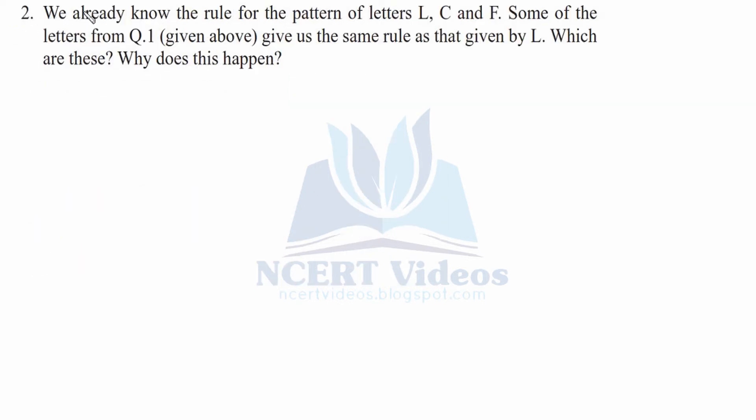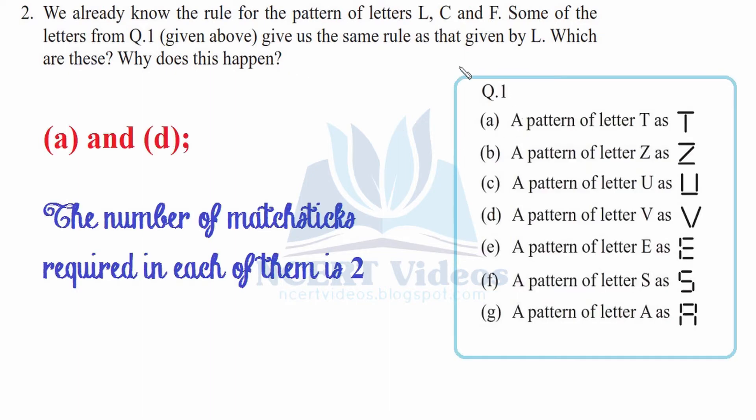Second question: we already know the rule for the pattern of letters L, C and F. Some of the letters from question 1 given above give us the same rule as that given by L. Which are these? Why does this happen? So we have to use question number 1 in order to solve this question. We are given that we have to find the rule for L. We knew from the previous question that it was 2 times the matchsticks, 2N, because it has 2 matchsticks.